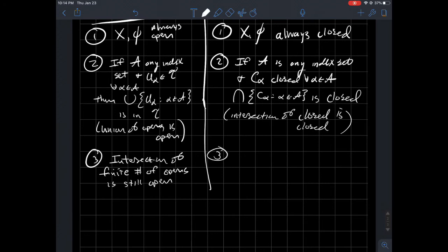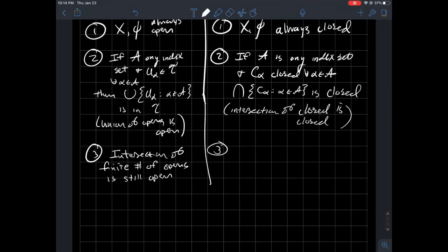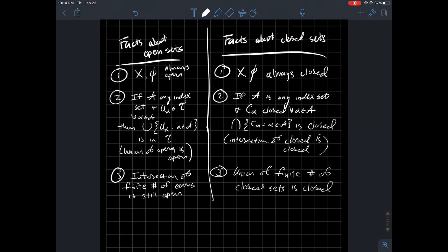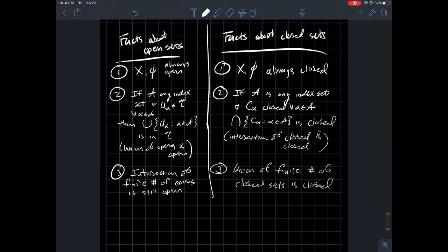And then finally down here, closed sets don't play as nicely with unions. So, we can only guarantee that the union of a finite number of closed sets is closed. So, again, those things really come from DeMorgan's laws. So, like, these two correspond to each other with DeMorgan's laws. And that might be a good exercise to you to try to prove both of those if you wanted more to do.